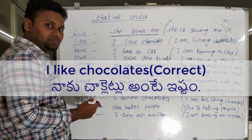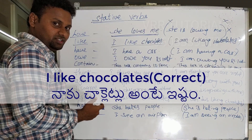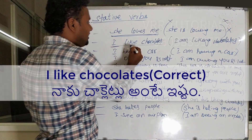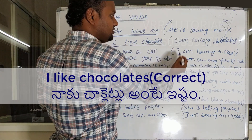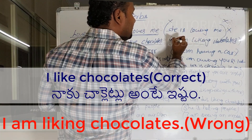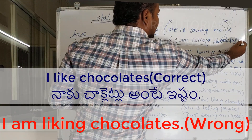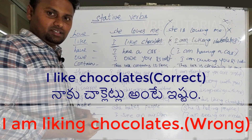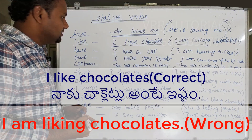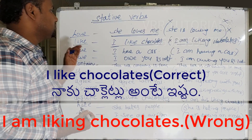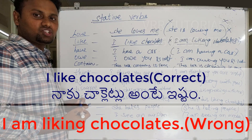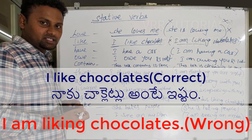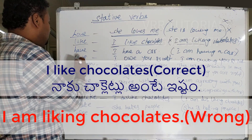Same with 'like.' I like chocolates — that is correct. Saying 'I am liking chocolates' is an incorrect sentence. So: I like chocolates, not I am liking chocolates.